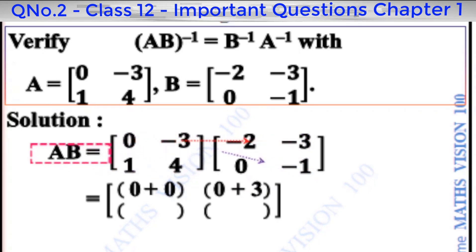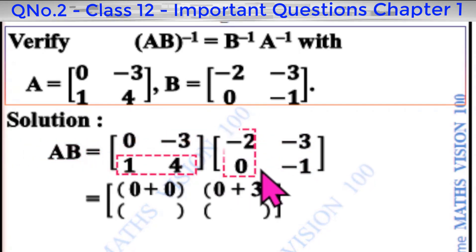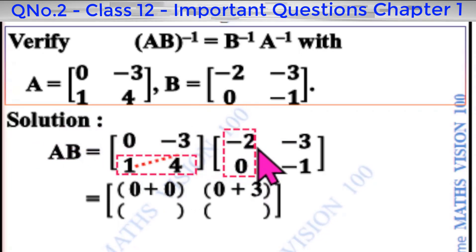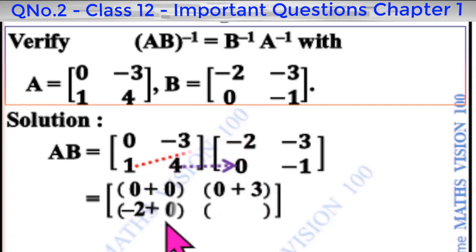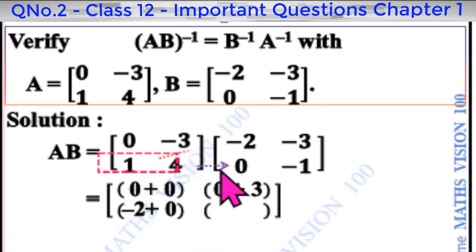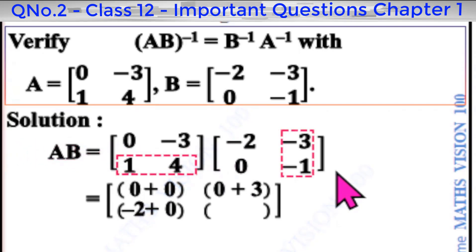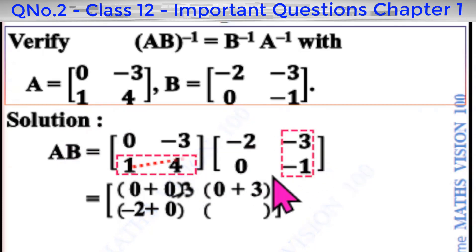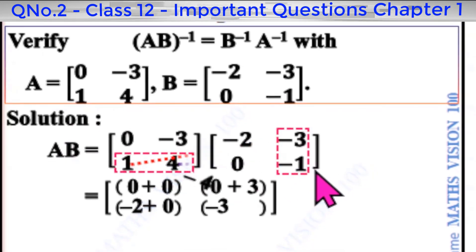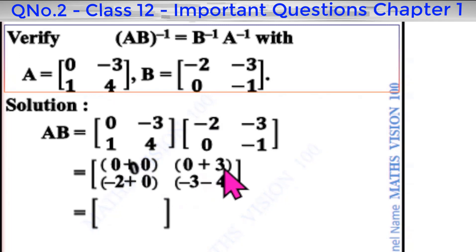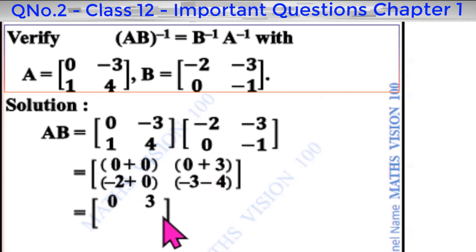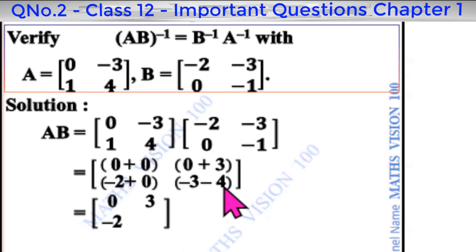Second row, first column: 1 into minus 2 is minus 2, plus 4 into 0 is 0. Second row, second column: 1 into minus 3 is minus 3, 4 into minus 1 is minus 4. So AB equals [[0, 3], [-2, -7]].